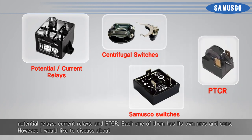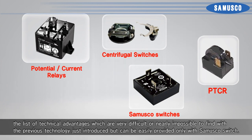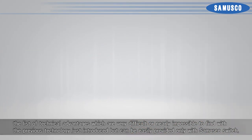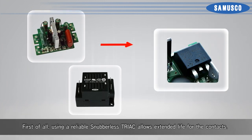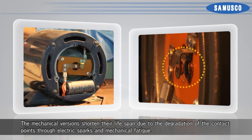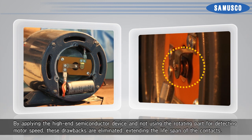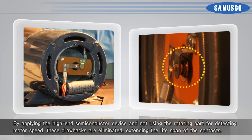I would like to discuss the list of technical advantages which are very difficult or nearly impossible to find with previous technology, but can be easily provided only with the Samosco switch. First of all, using a reliable snubberless triac allows extended life for the contacts. The mechanical versions shorten their lifespan due to the degradation of contact points through electrical sparks and mechanical fatigue. By applying a high-end semiconductor device and not using the rotating part for detecting motor speed, these drawbacks are eliminated, extending the lifespan of the contacts.